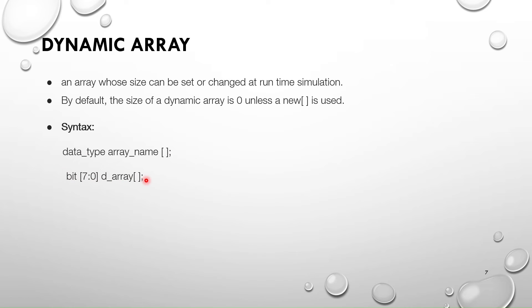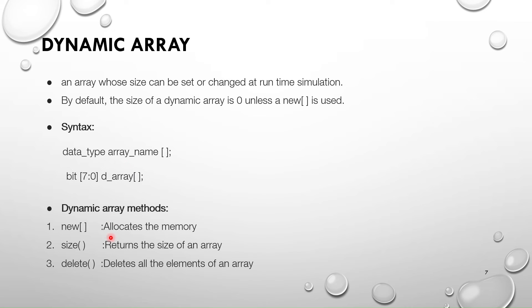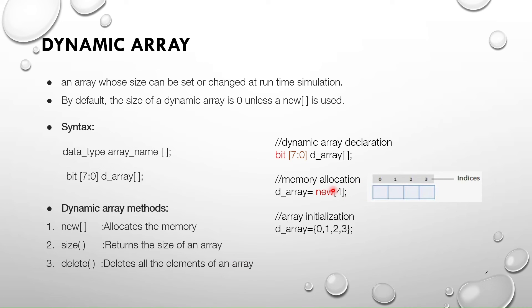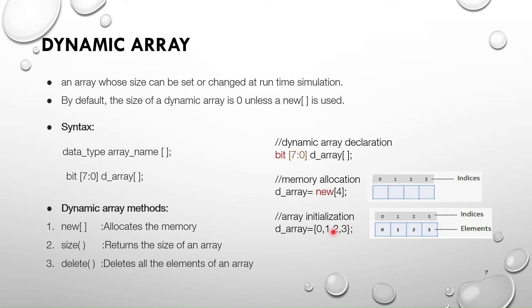For example: `bit [7:0] d_array []`. In dynamic arrays we have three methods: the `new` method which allocates memory, the `size` method which returns the size of the array, and the `delete` method which deletes the elements. For example, `d_array = new[4]` creates 4 memory locations. Initialization is the same as a normal array — since we allocated size 4, we can store four values at indices 0, 1, 2, 3.